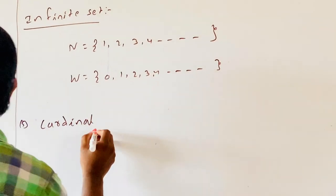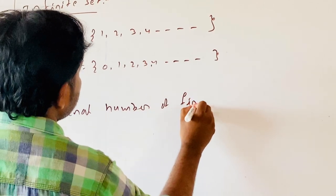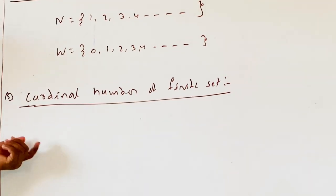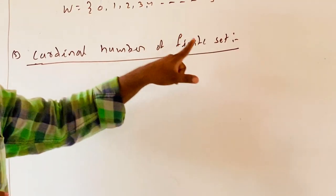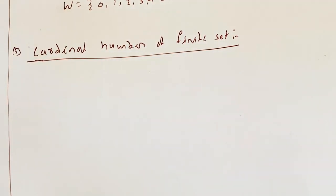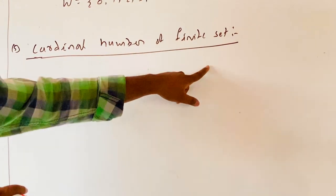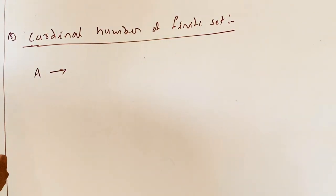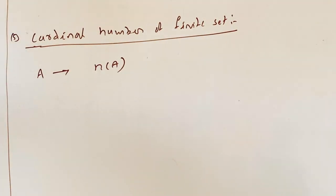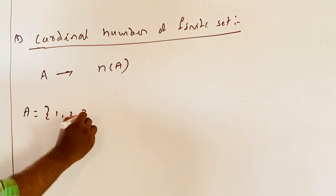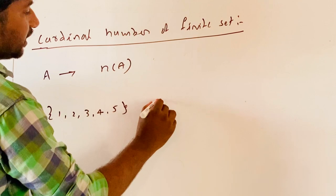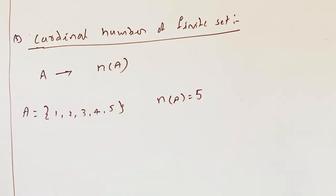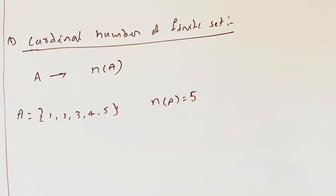Next is the cardinal number of a finite set. The number of elements in a finite set is called the cardinal number of that set, denoted by N(A). For example, if A equals {1, 2, 3, 4, 5}, then N(A) equals 5. That is the cardinal number of the finite set.